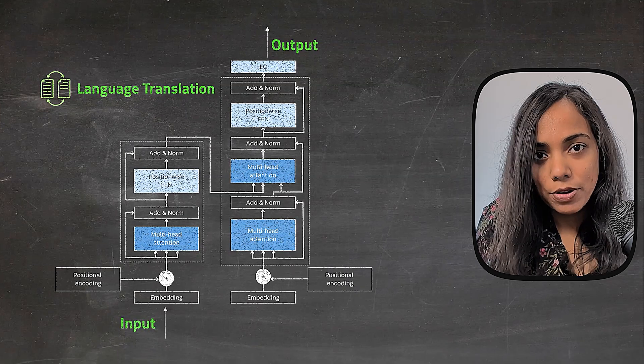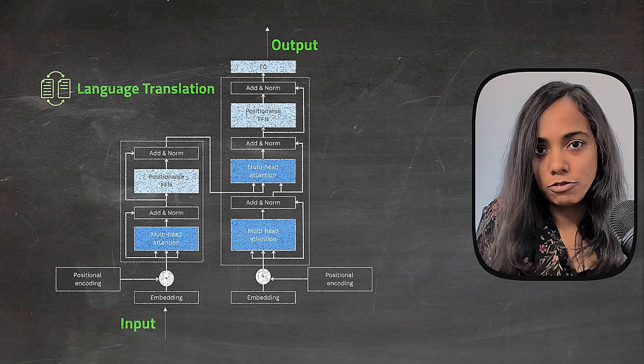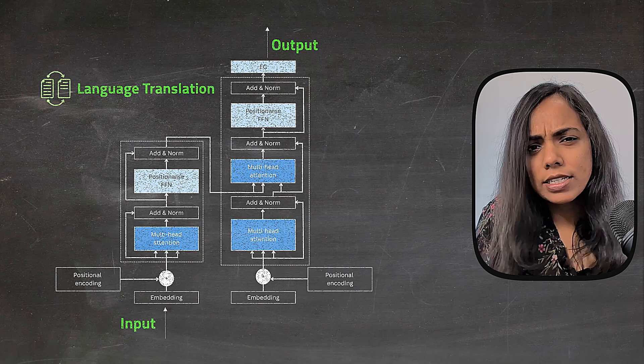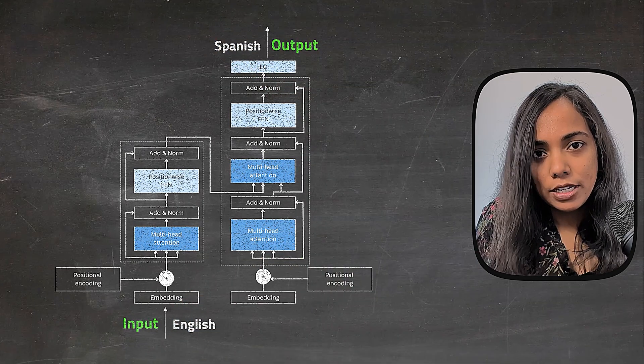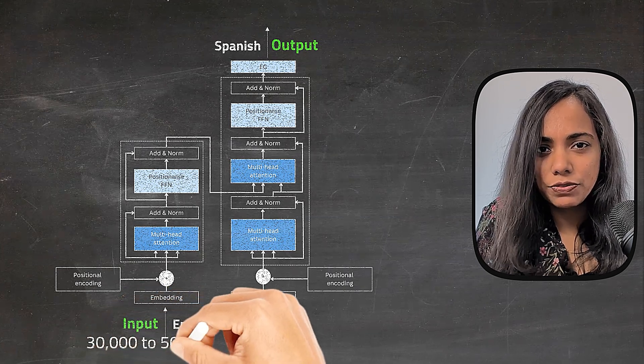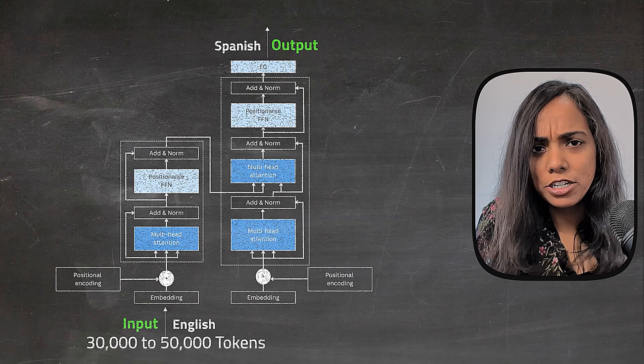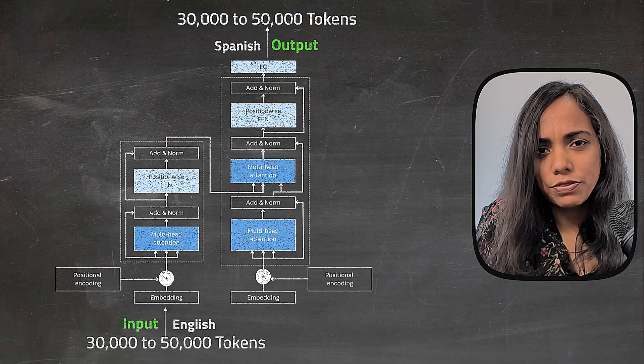The transformer works by using two vocabularies, one for input language and one for the output language. Let's take English and Spanish as examples. Typically, the English vocabulary has about 30,000 to 50,000 tokens and Spanish has a similar range of about 30,000 to 50,000 tokens.